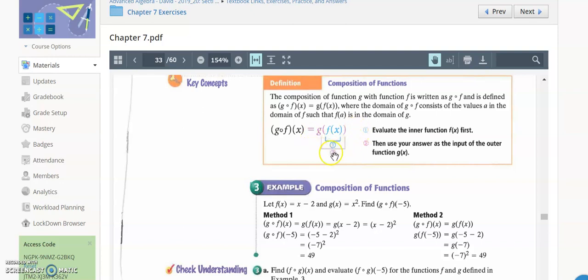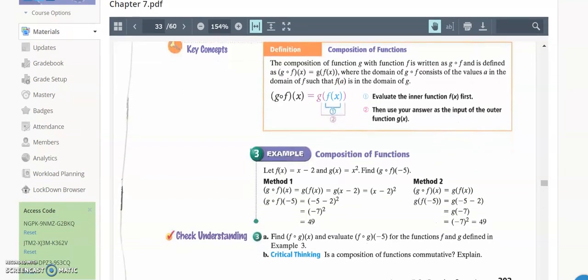G is the outside function. So whatever you get as an output here, we're going to plug and chug there.